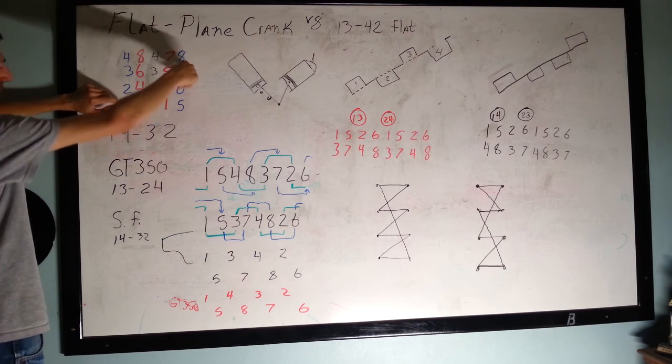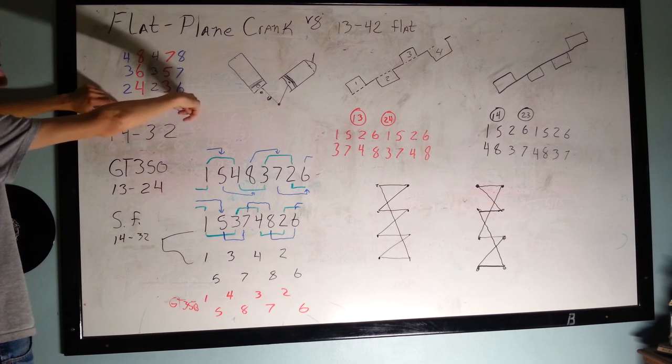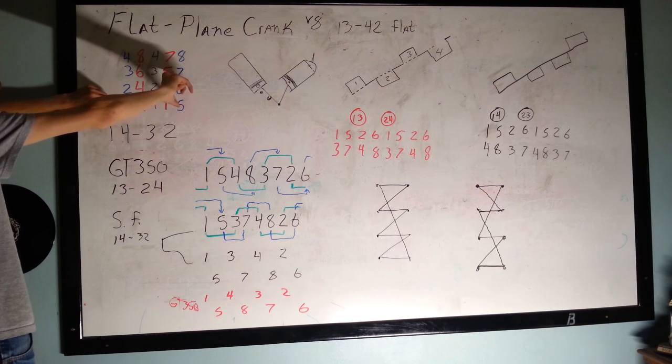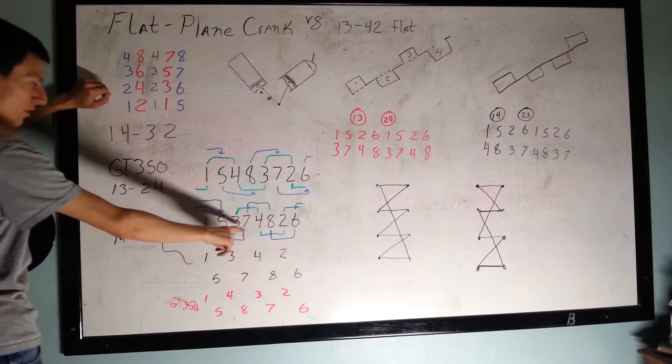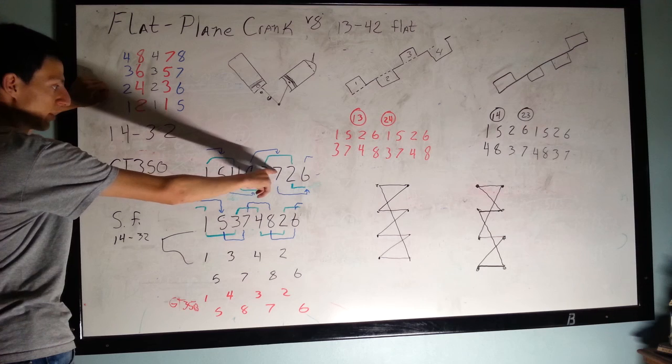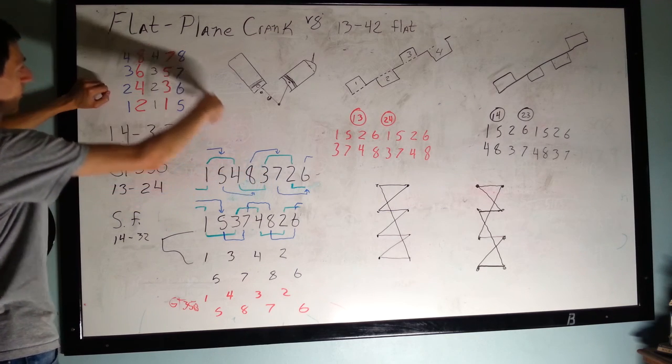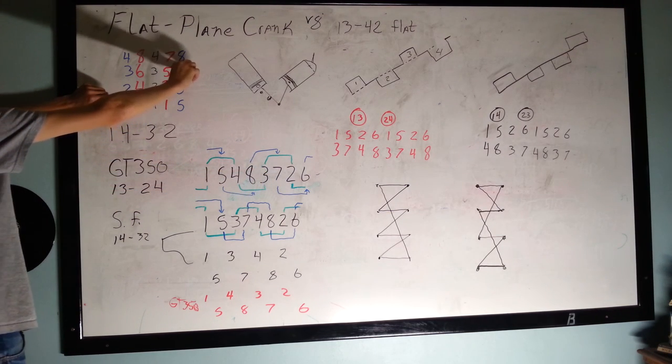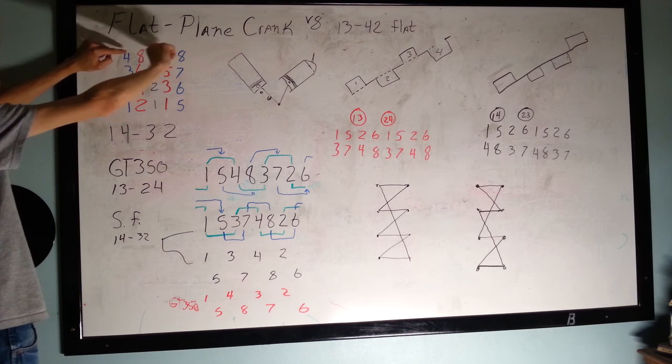So, 7 here is helped by 5 and by 1. These are closer. 7 over here is helped by 8 and by 4. So, 7 is helped by 8 and 4. These are closer together.